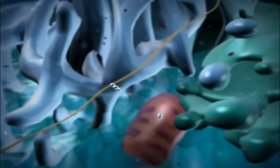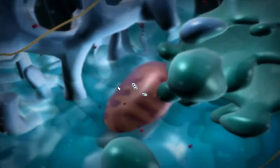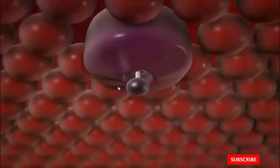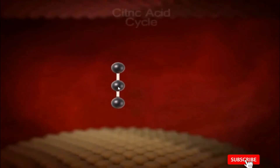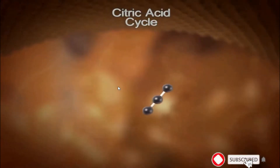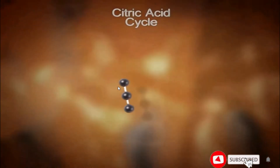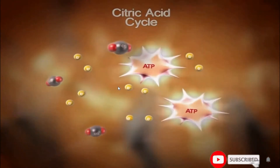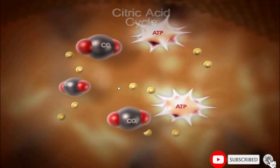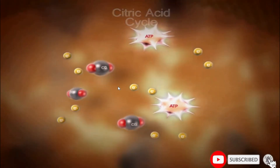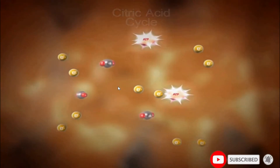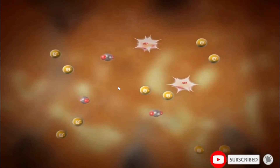Each three-carbon pyruvic acid molecule then enters the mitochondria as part of the second step, the citric acid cycle. Two more ATP are created and carbon dioxide is released as a waste product. High-energy electrons are again released.